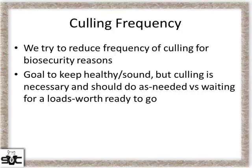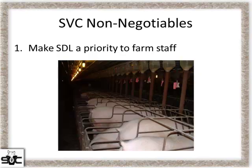I'll wrap up with the Swine Vet Center non-negotiables. Number one: make sow death loss a priority to farm staff. Is this as important as pre-wean mortality, as important as any other production target? This is what we have to do to establish a change in sow mortality.